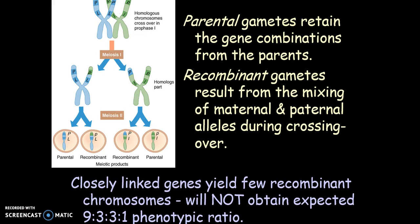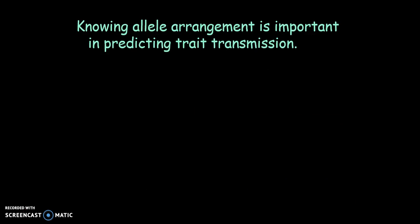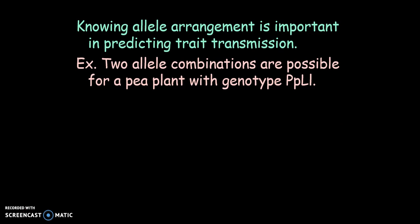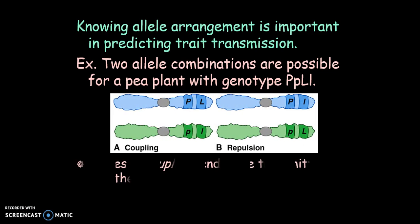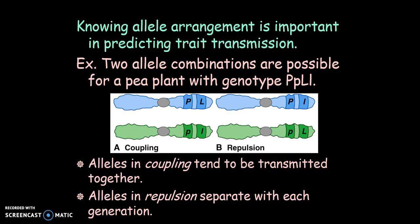Closely linked genes yield few recombinant chromosomes and will not produce the expected 9:3:3:1 phenotypic ratio. It's very important to know the allele arrangement on the chromosome. We have two allele combinations possible for a pea plant with genotype big P, little p, big L, little l — and we have coupling and repulsion. Alleles in coupling tend to be transmitted together, while alleles in repulsion separate with each generation.